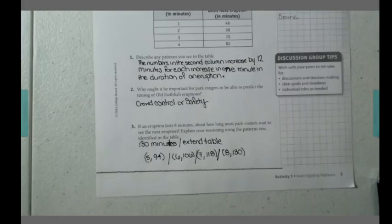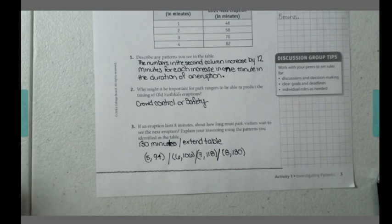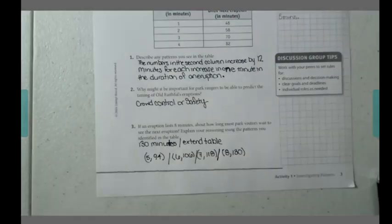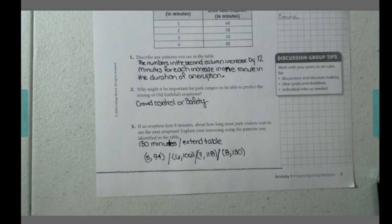You could say something along the lines of the length of eruption in minutes increased by one each time, the approximate time until the next eruption increased 12 minutes for every one minute increase in the length of the eruption.